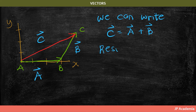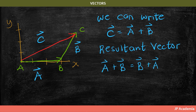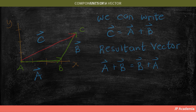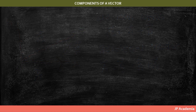Therefore, one must take into account the directions when working with vectors. Another thing to note is that the order in which vectors are added does not matter to get the resultant vector — so A plus B equals B plus A. We can add vectors graphically, but we will use trigonometry for a more accurate result.